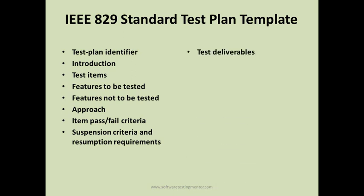There can be many suspension and resumption criteria defined in the test plan. Then you document the test deliverables — what will be delivered at the end of the test cycle, such as the test strategy, test plan, suite of test cases, test scripts, and any automation scripts. You also document the testing tasks that need to be done, and the environmental needs — how the test environment will look, including hardware and software requirements.